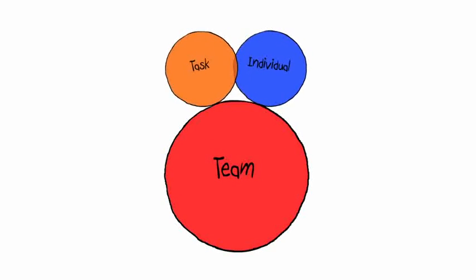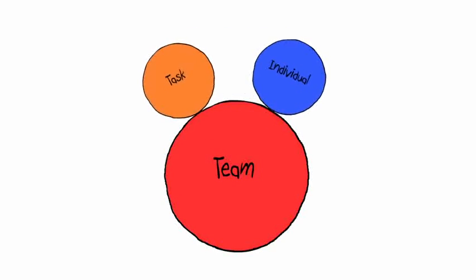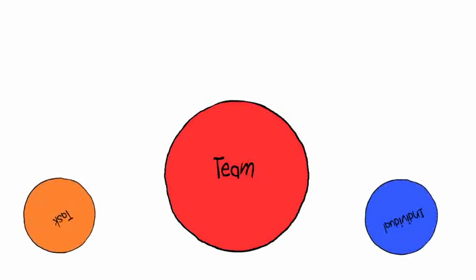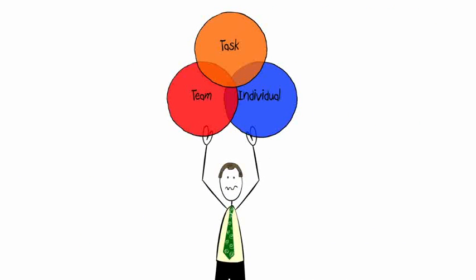But if too much time is taken to create a good team spirit without paying enough attention to the goal, it's likely to mean that the team will lose its focus. So you see why leader John has to balance all three elements to get to this lovely middle part of the model here.